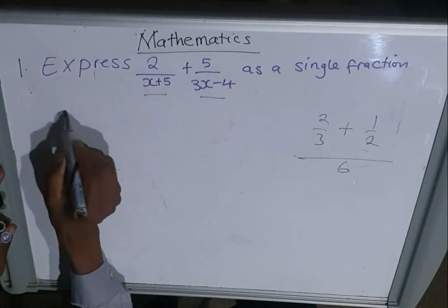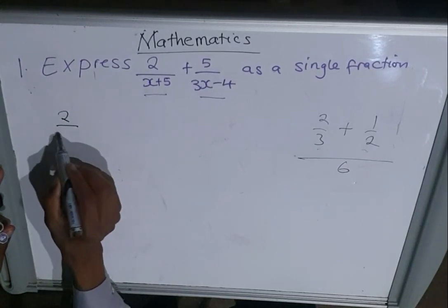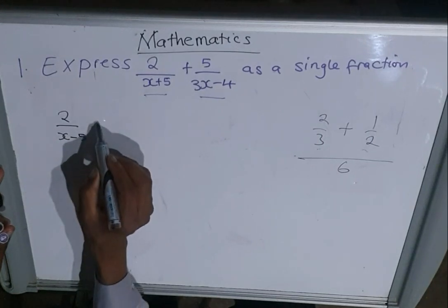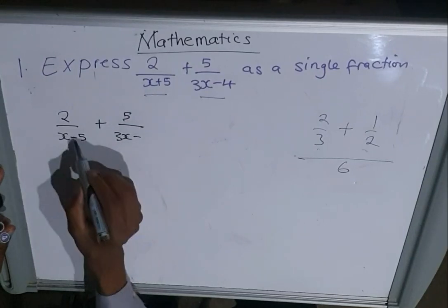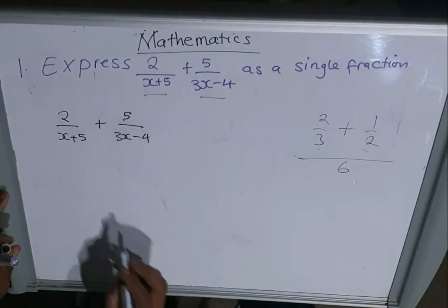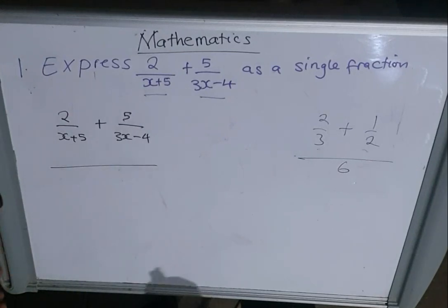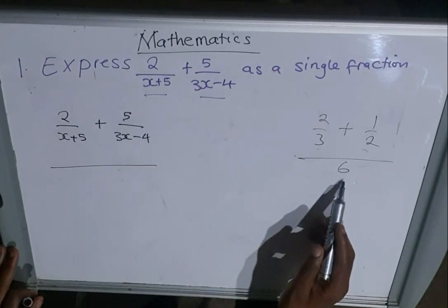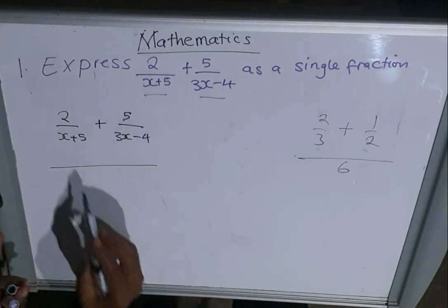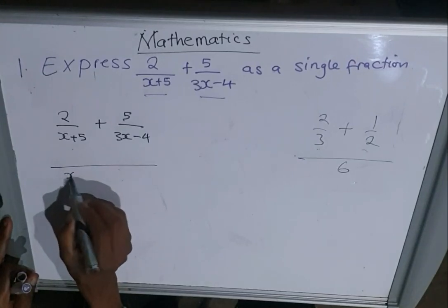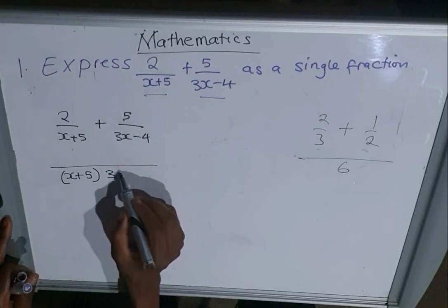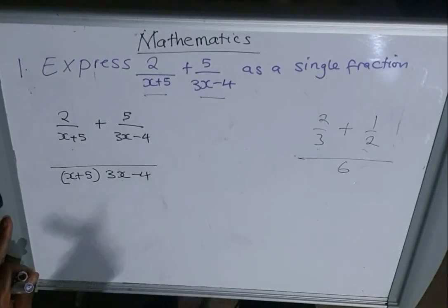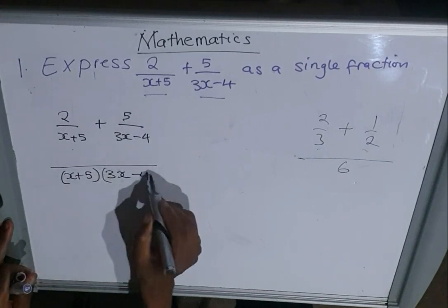So you copy down the question: 2/(x+5) + 5/(3x-4). We draw a line and find the common denominator. Now the only difference here is that we are not supposed to multiply these two until you get the final answer. You just have to bring these two numbers at the bottom here. So we have (x+5) in brackets and (3x-4). Now remember, brackets simply mean multiplication.